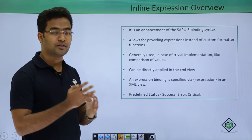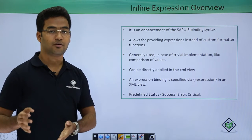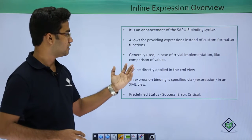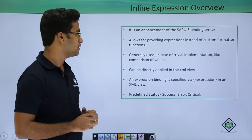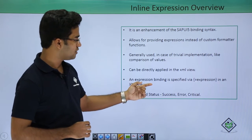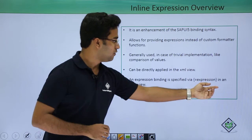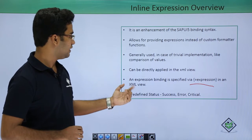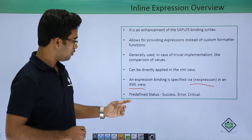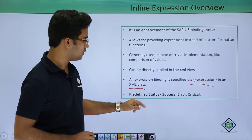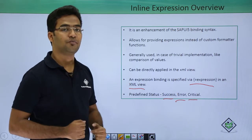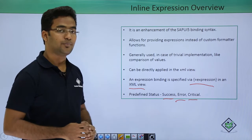For example, if a particular value is greater than some threshold, it should give one result; if it is less than that value, it should give another. So generally inline expressions are used for comparison of values, and they can be directly applied in XML views using expression binding syntax. There are some predefined statuses like success, error, and critical — these are predefined statuses provided by SAPUI5.